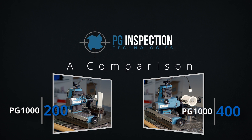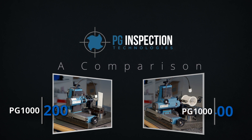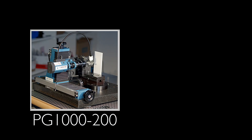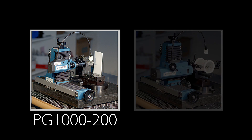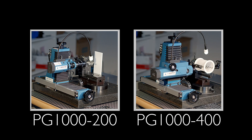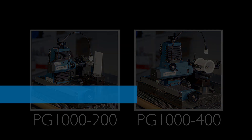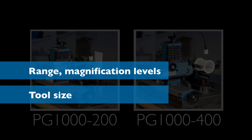The differences between PG-1200 and PG-1400 fall into three basic categories. Two of the differences — tool size and magnification range — are pretty simple. Encoders are a little bit more complex, but they are very significant. Let's look at the simple ones first.